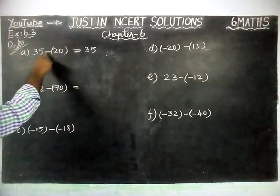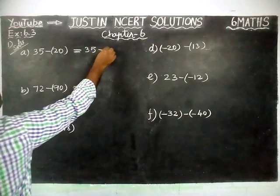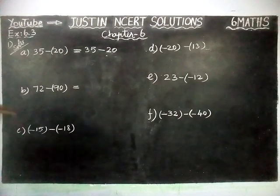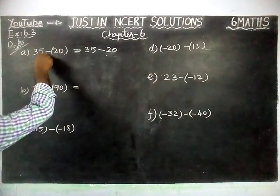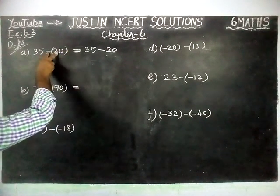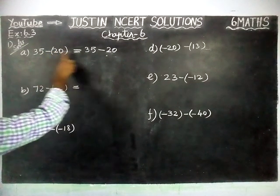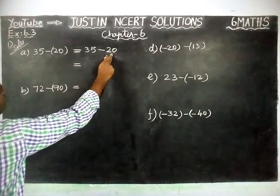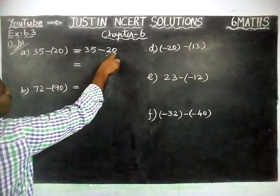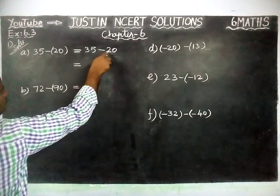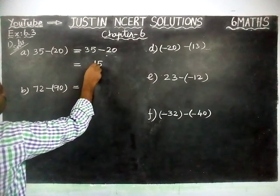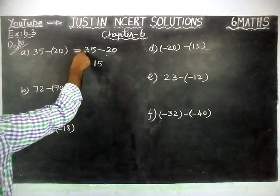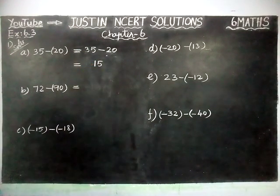This is a positive number, so minus into plus equals minus 20. That minus is taken for 20, giving us 35 minus 20. When we multiply minus into plus that equals minus 20. Now subtracting: 5 minus 0 equals 5, and 3 minus 2 equals 1. In between these two, 35 is the greatest number and in front of 35 a plus sign is there. So plus 15 is the correct answer.